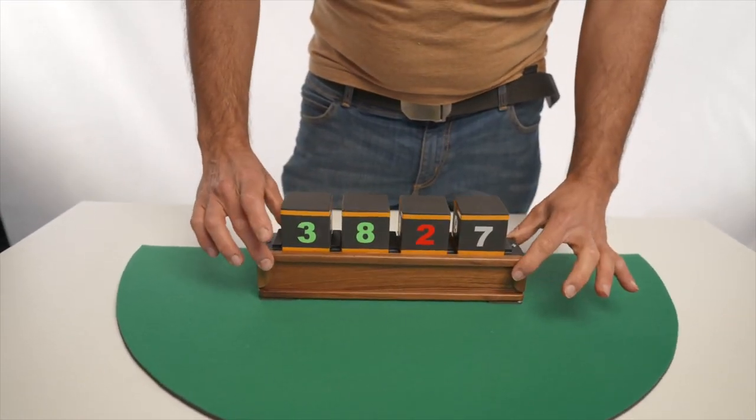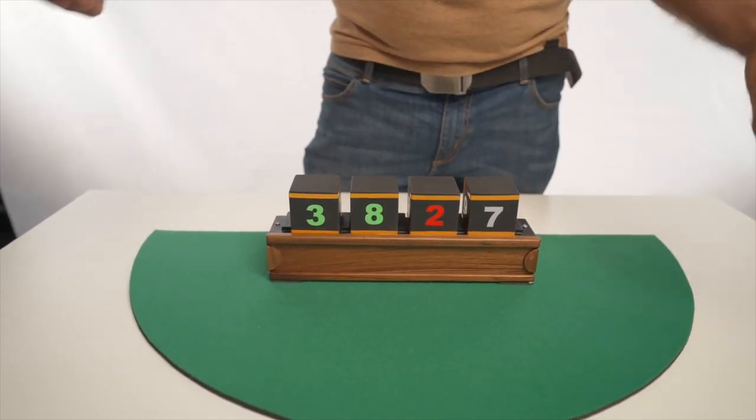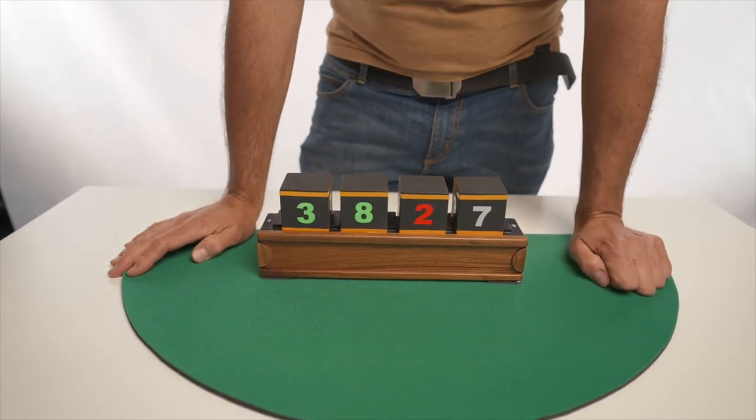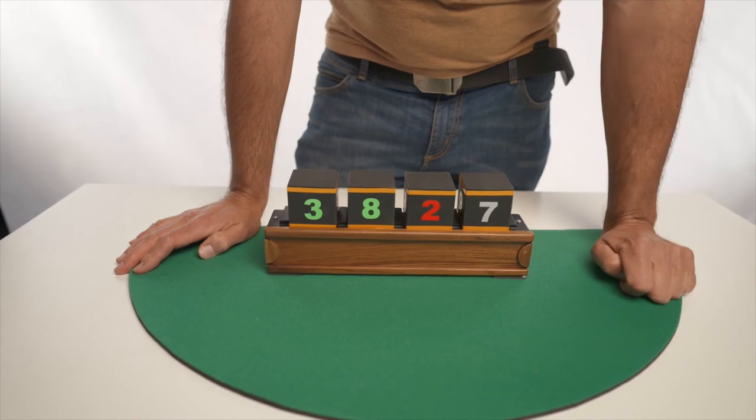So, you have chosen the cubes, you have chosen the numbers and colours. The cubes form a four-digit number: three, eight, two, seven. Well,